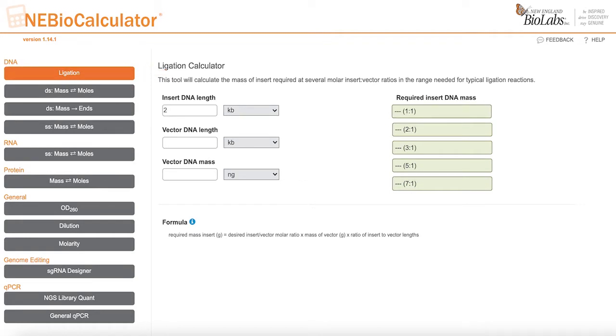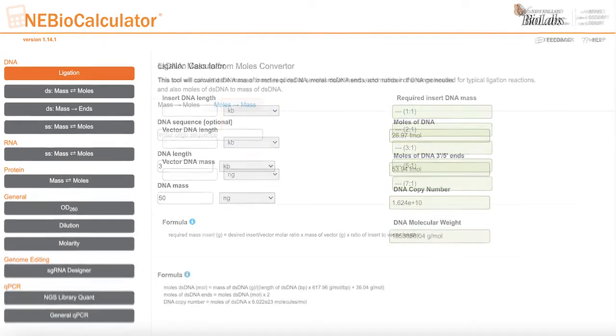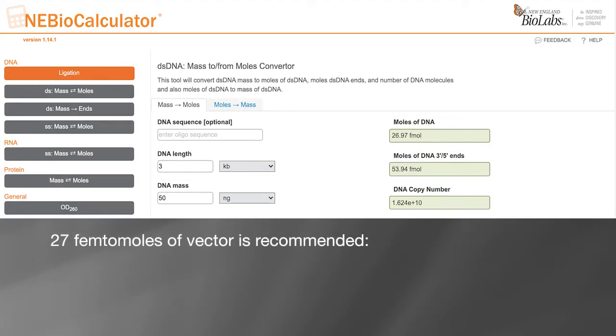Enter 2 KB for your DNA insert length and 6 KB for your vector DNA length, making sure that the units selected are correct. We recommend 27 femtomoles of the vector to ensure you have enough DNA ends to conduct a successful ligation.